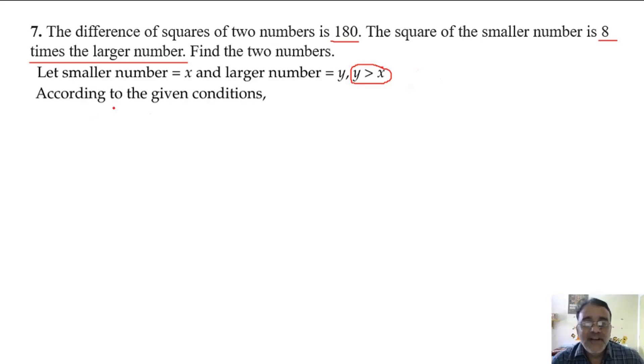So according to the given condition, the difference of the square of two numbers is 180. So y square minus x square is equal to 180. Why we are writing y first? Because y is greater than x.